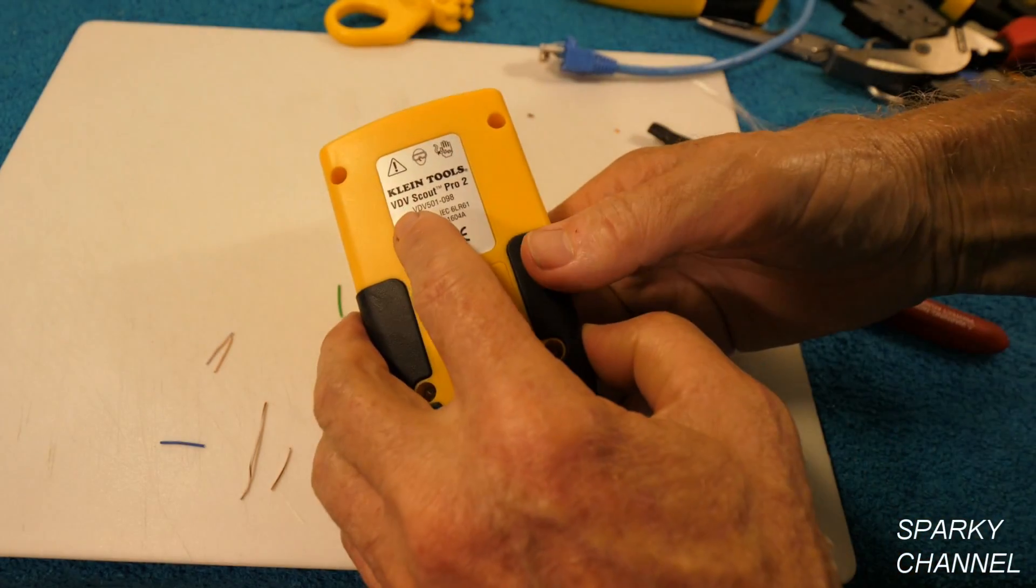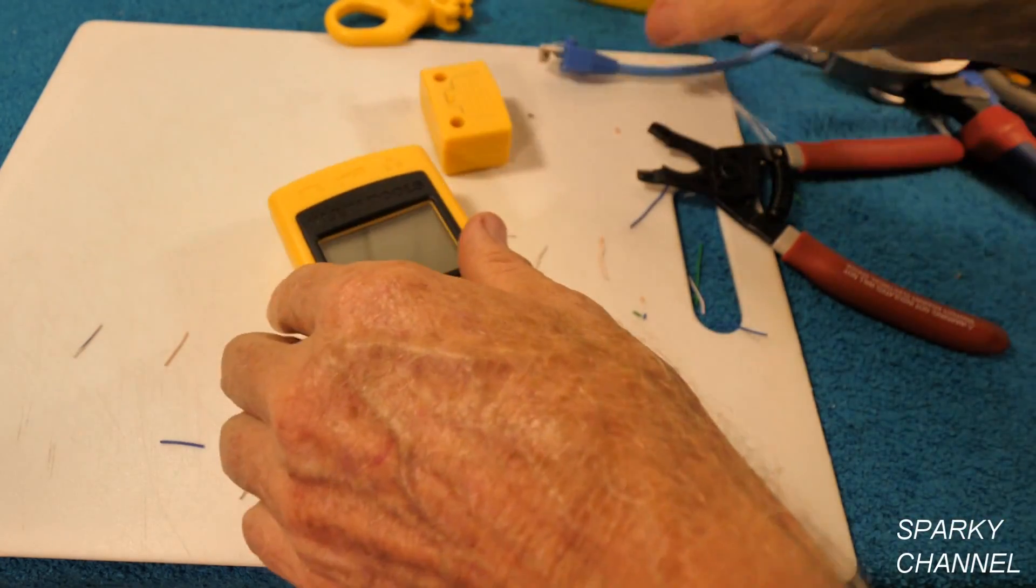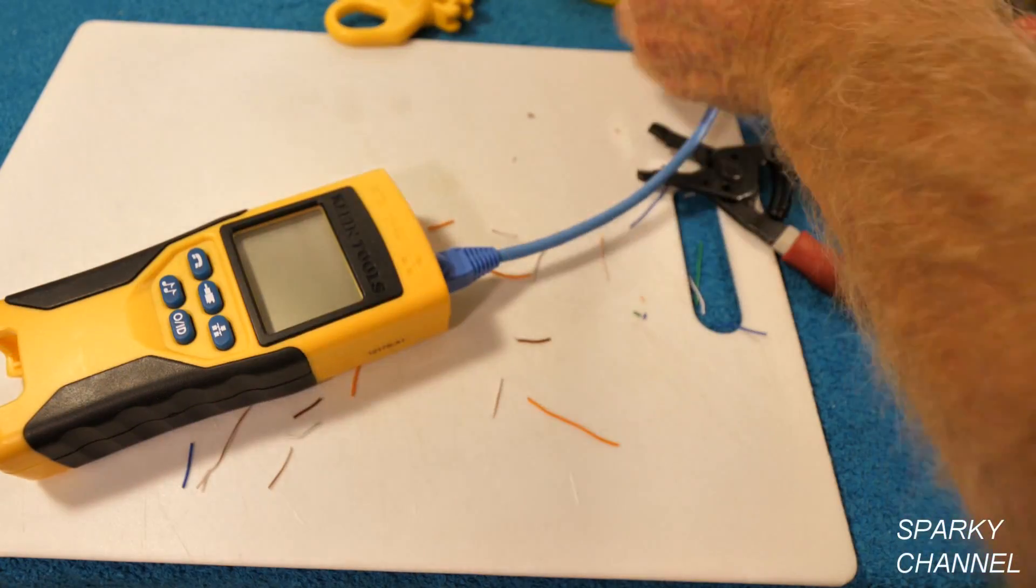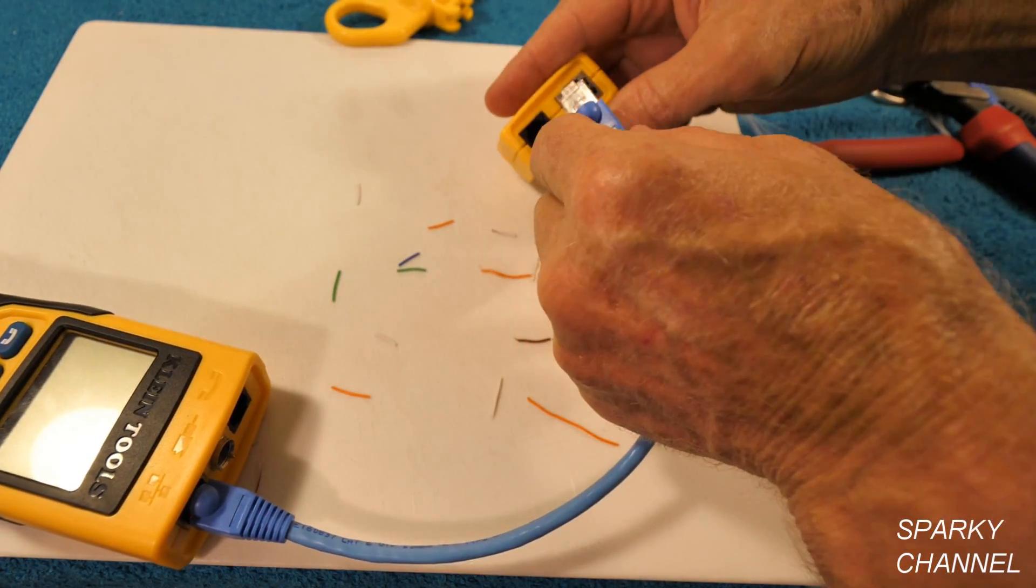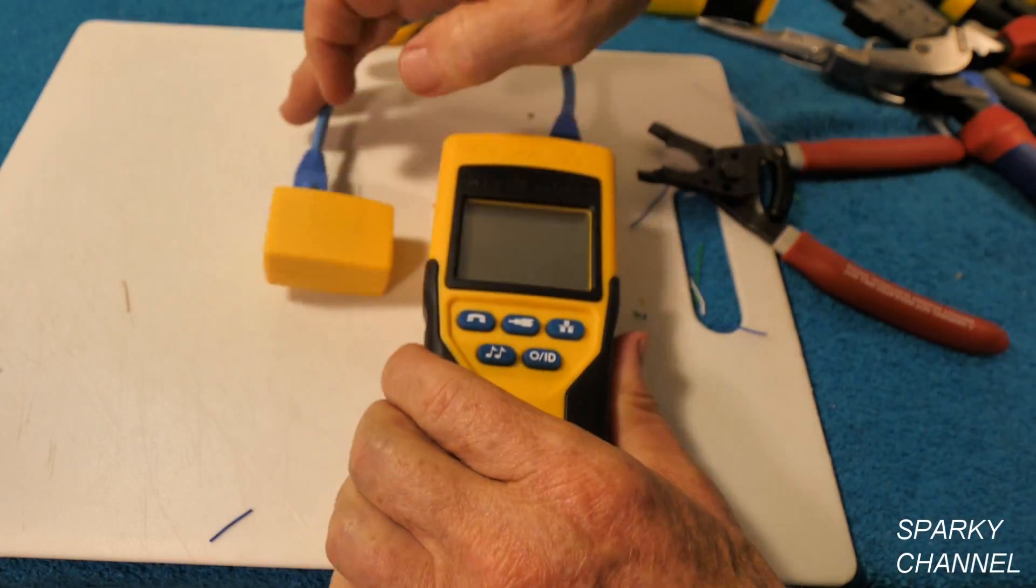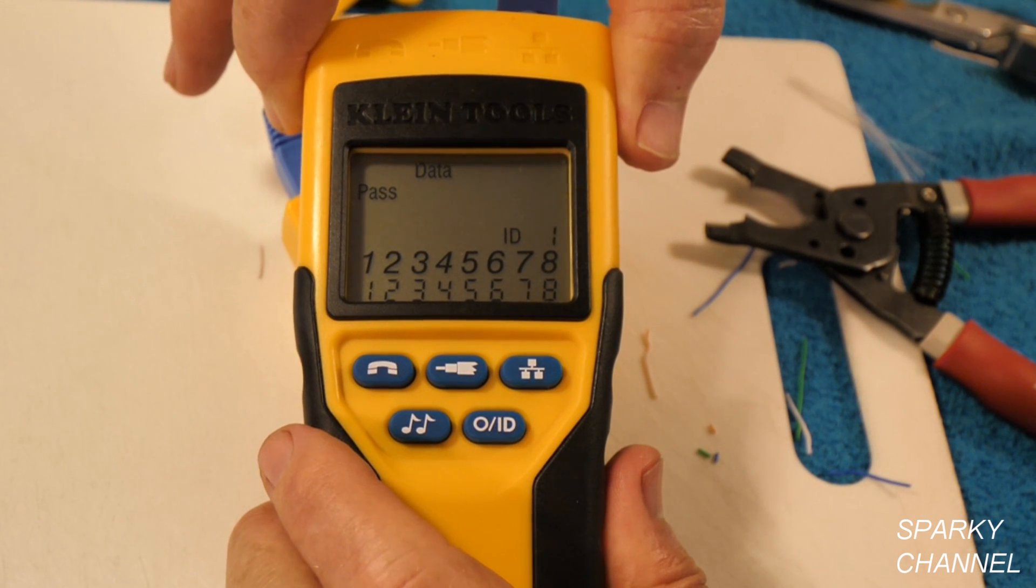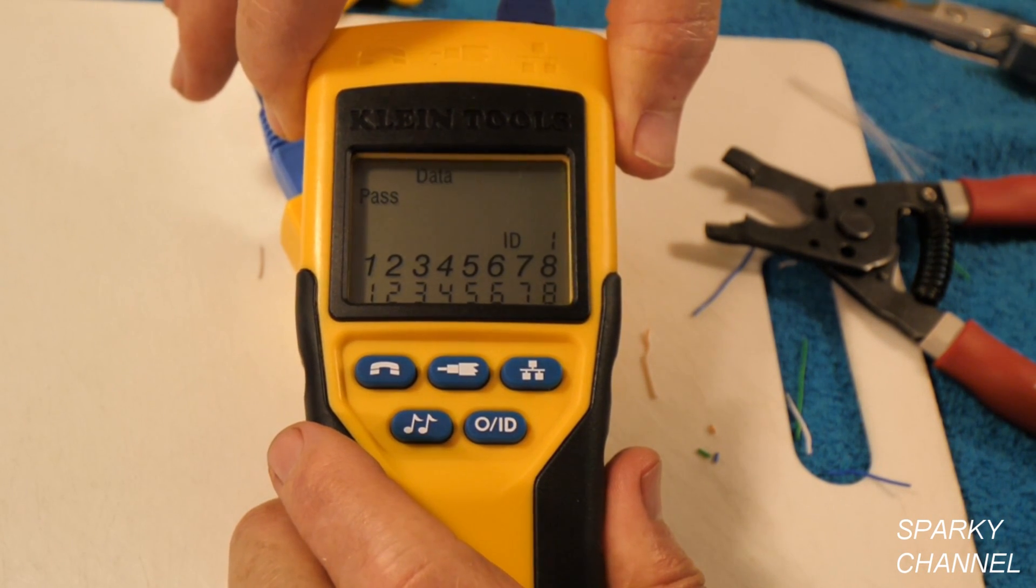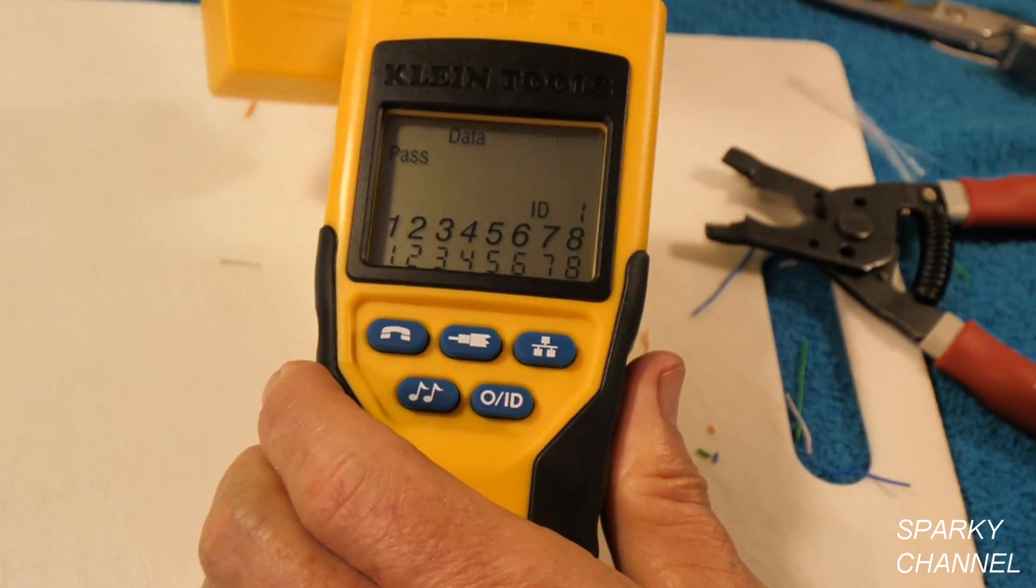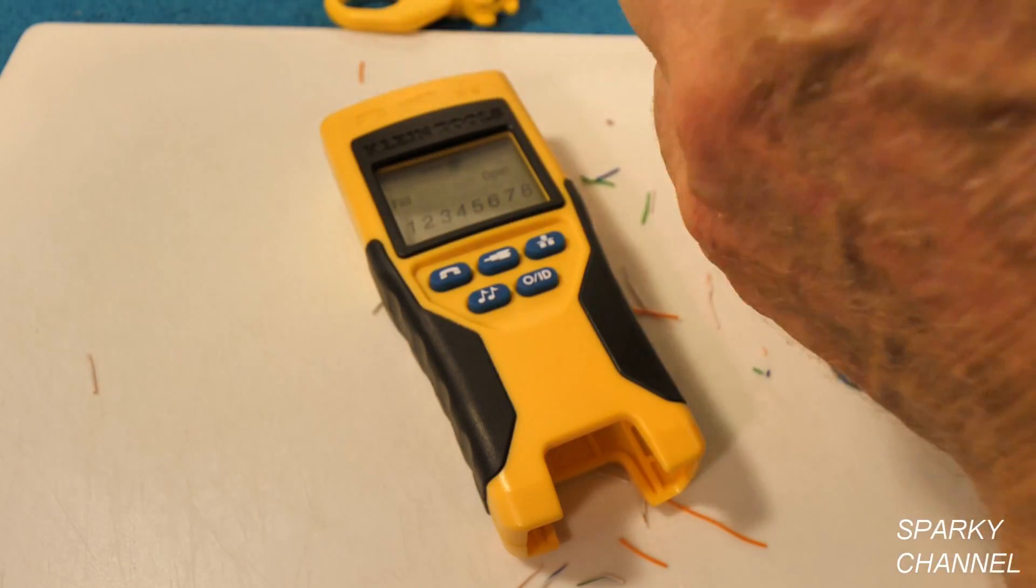This is my VDV Scout Pro 2 tester. And I'm going to go ahead and test this out. Plug one end there. One end in the remote. And we'll turn it on data. Pass. ID 1 refers to the remote. And all these numbers are lined up.